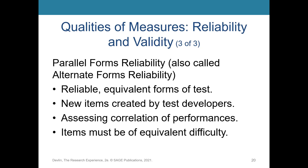There's also parallel forms reliability, also referred to as alternative forms. Basically, you give two different versions of the test and see how the new items correlate with the old items — you want them to correlate highly if they're relatively similar. The items must be similar in difficulty for the test to be truly parallel.